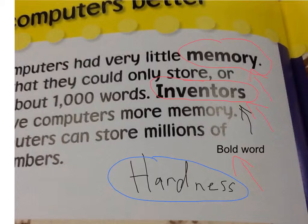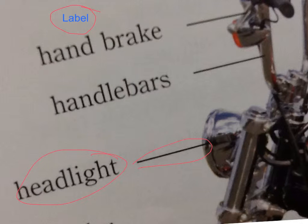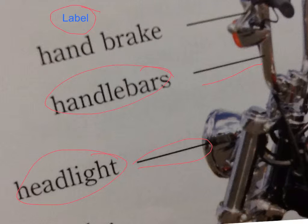This is a label. A label is usually found in a diagram. For example, there's a line and a word that shows you where a particular part is. If I want to know where a handlebar is, I just follow the line and it's right there. Labels help people because they tell you which part of the diagram means what. People use labels to help them understand the diagram more.